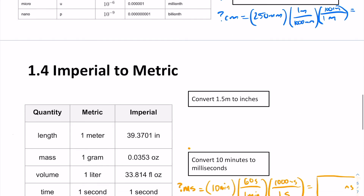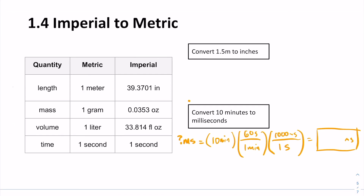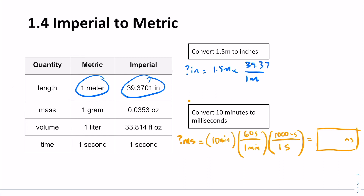What if we wanted to convert between the metric system and imperial? Again, write out what you want to know — inches — and write out what we have: 1.5 meters. Write our conversion factor. In this case, a handy chart tells us 1 meter equals 39.37 inches. Dimensional analysis: meters on top and meters on bottom cancel, and we get our answer in the remaining units — inches.